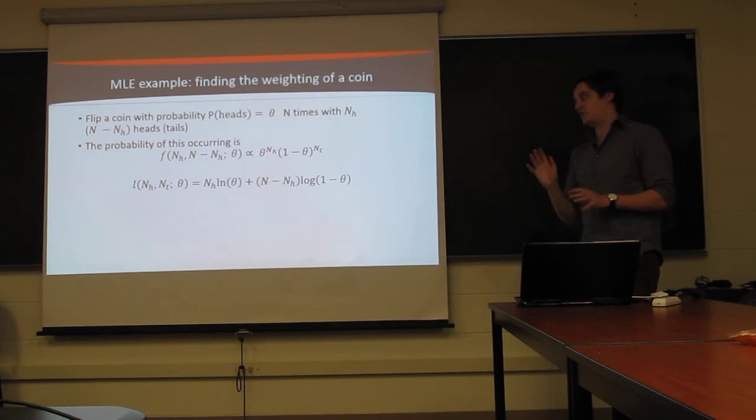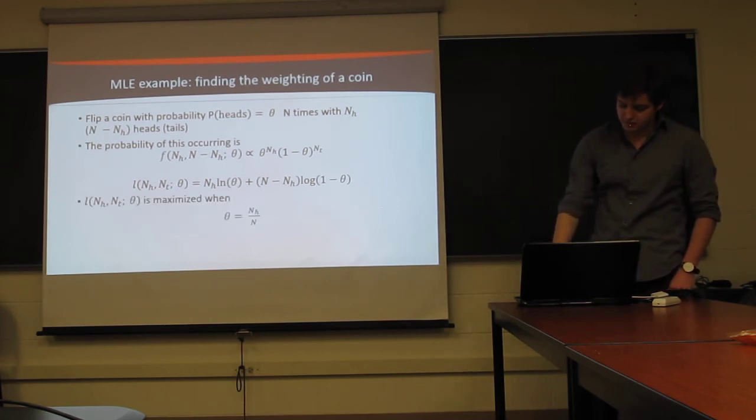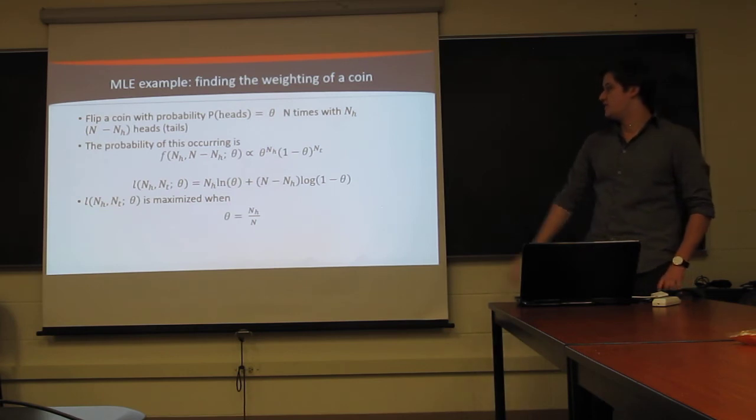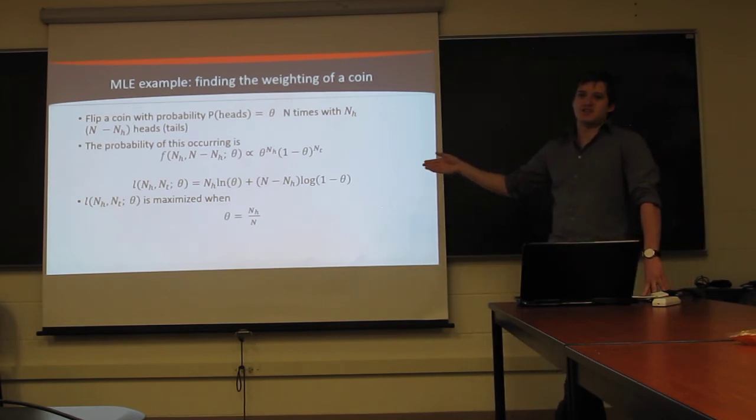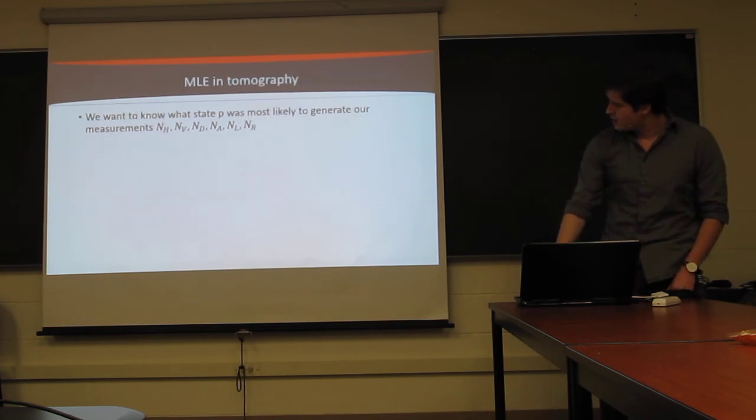Now, I've thrown out the combinatorial factor here because in terms of a maximum likelihood estimate, that doesn't matter. It just ends up washing out and we don't care about it. So, it's a lot simpler to just ignore it. And then we can take the log of it. We get our product breaks up into a sum. And if we maximize this with respect to theta, we get that theta is just equal to the number of heads over the number of flips you did. Which is exactly what one would expect the weighting of a coin to be. Obviously, the accuracy of this gets better the more flips you make, or rather the precision.